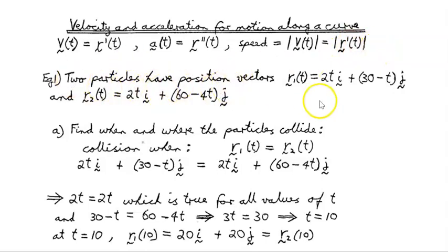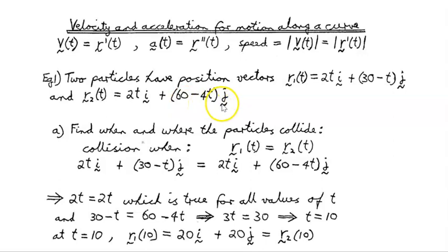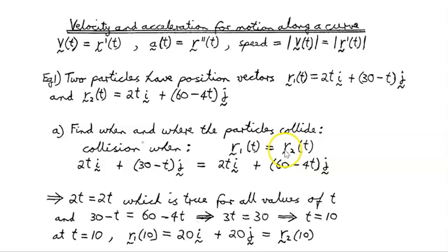Two particles have position vectors: r1(t) = 2t i + (30 − t) j, and r2(t) = 2t i + (60 − 4t) j. For step one, let's find when and where the particles collide. 'Where' means setting the two position vectors equal to each other, and then we solve for t — equating the coefficients — to tell us when they collide.